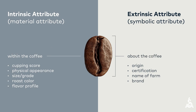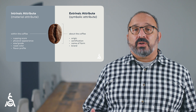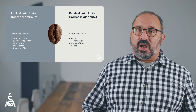Some attributes are intrinsic to the coffee and are a part of their material reality. This would include the flavor of the coffee due to its chemical makeup, its physical properties, grade, etc. But also important are the extrinsic attributes, which are usually information about the coffee — things like its country of origin, brand, or sustainability certification. Both categories of attribute are important, and both add value to the coffee.